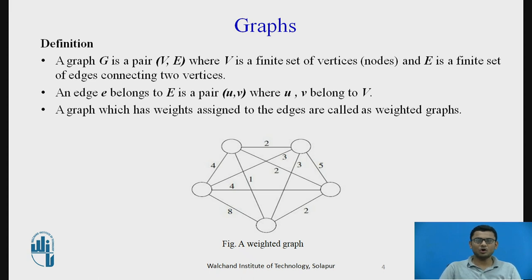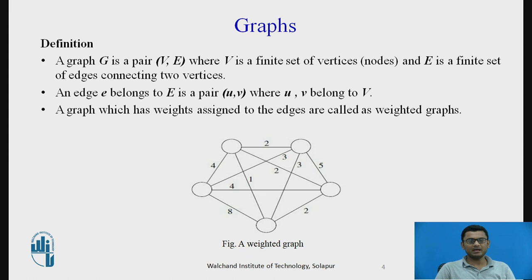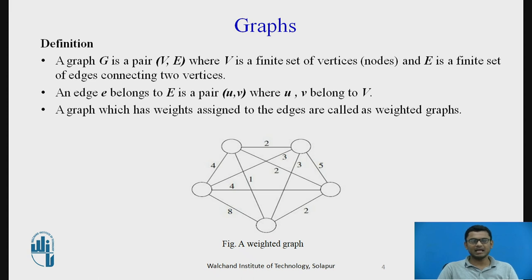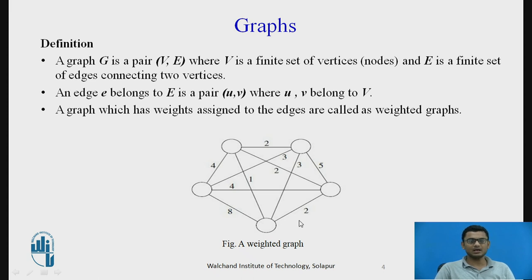A graph G is a pair of sets V and E, where set V is a finite set of vertices, also called nodes, and set E is a finite set of edges connecting two vertices. An edge E belonging to set E is a pair of two nodes U and V, where both U and V belong to set V. A graph which has weights assigned to its edges is called a weighted graph, as shown in the diagram below.